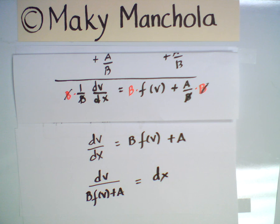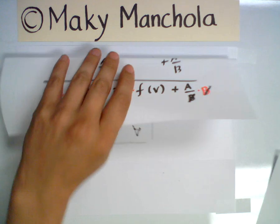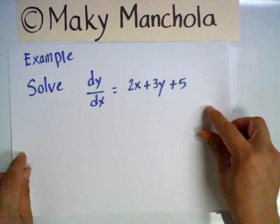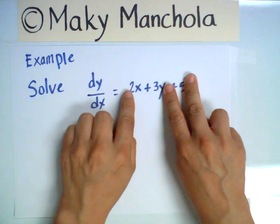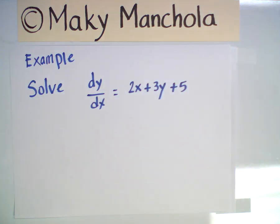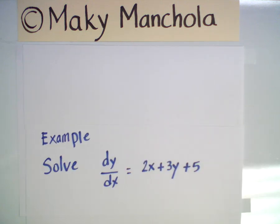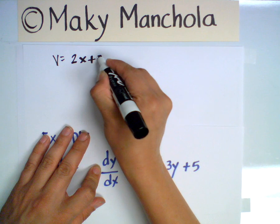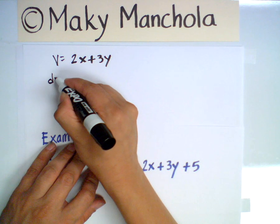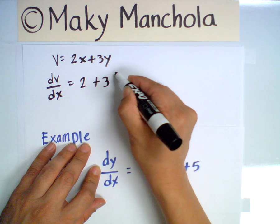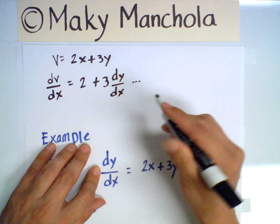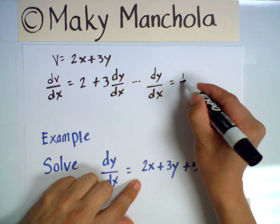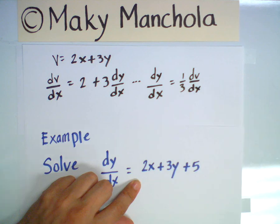Let's illustrate this method with an example. Our example is dy/dx equals 2x plus 3y plus 5. Our substitution is v equals 2x plus 3y. Differentiating both sides with respect to x gives dv/dx equals 2 plus 3·dy/dx. Solving for dy/dx, we obtain dy/dx equals (1/3)(dv/dx) minus 2/3.